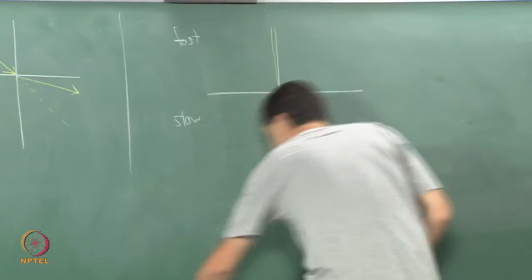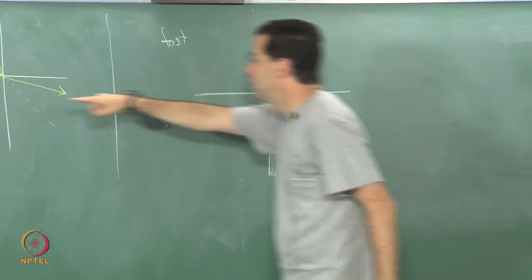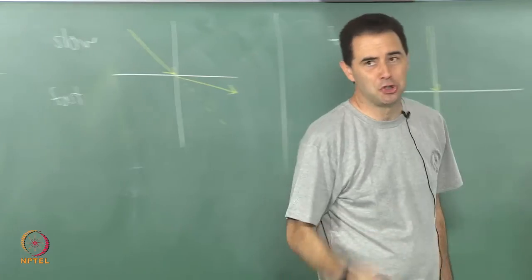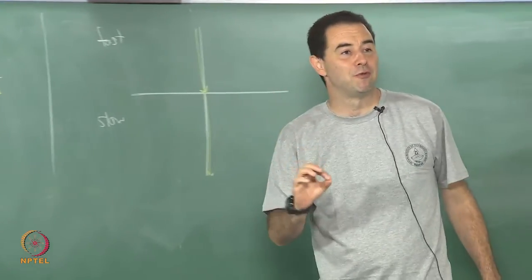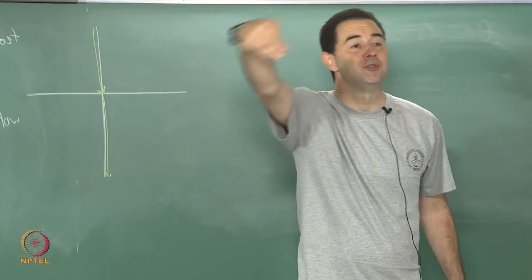However, when you come in at a larger angle, when the ray comes in at a larger angle, we see significant bending, correct. Just something to pay attention to. Two things become important: the difference in refractive indices and the angle at which the ray comes into the boundary.